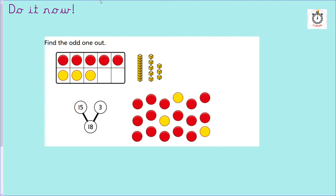Okay, let's have a look at this together. Let's count how many counters I have in my tens frame. One, two, three, four, five red ones. Six, seven, eight — eight altogether: five red and three yellows.